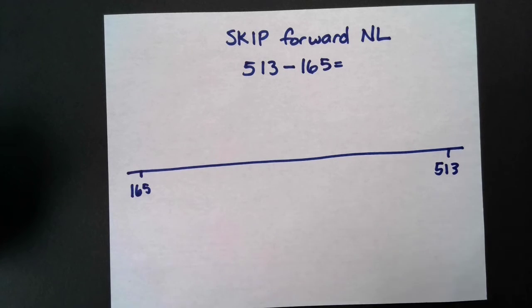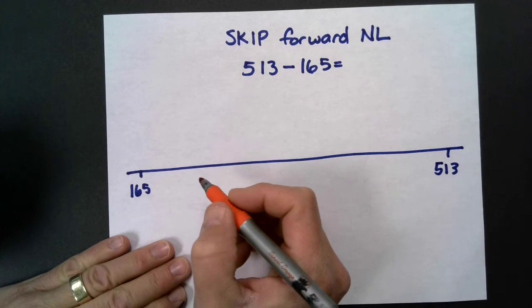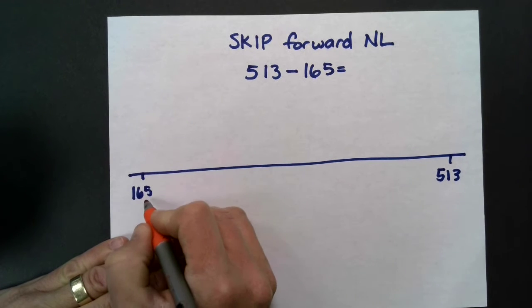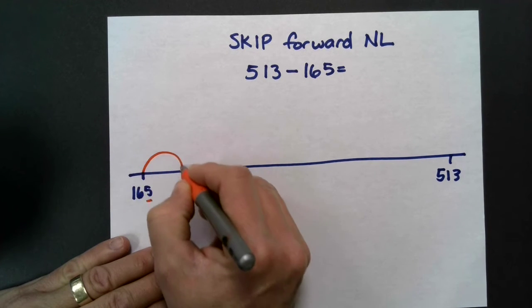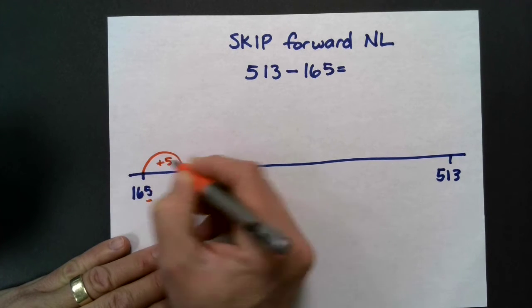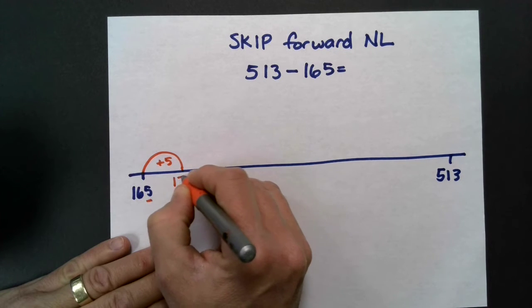What I'm going to do is jump or skip on the number line forward. So if I have 5, I know that I can add another 5 to make the next decade number, which would be 170.